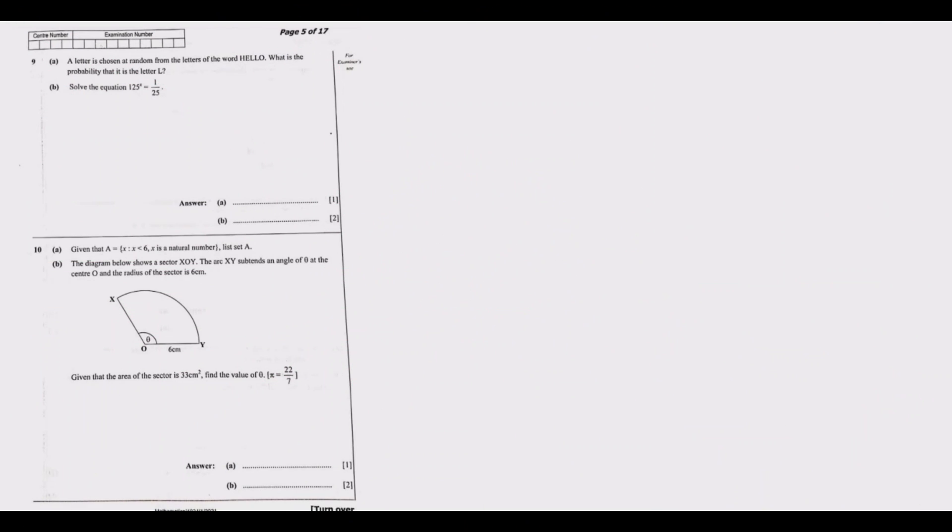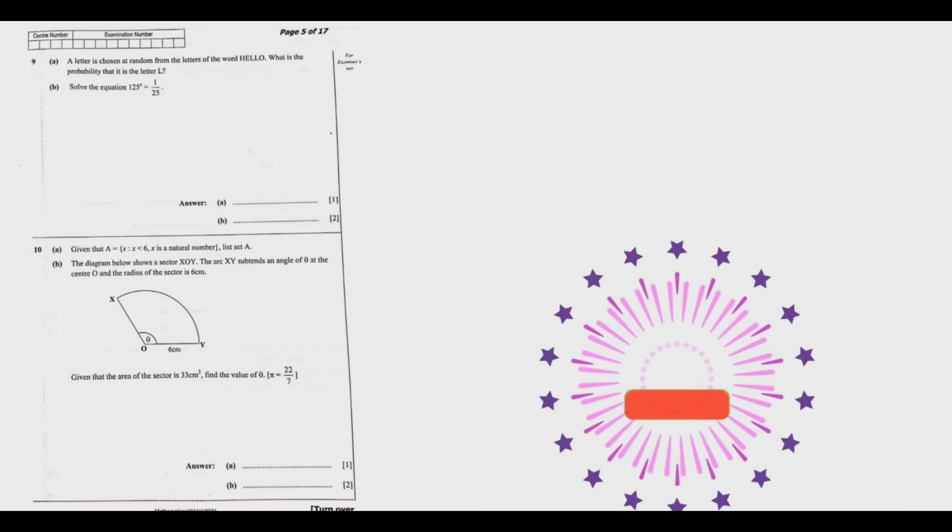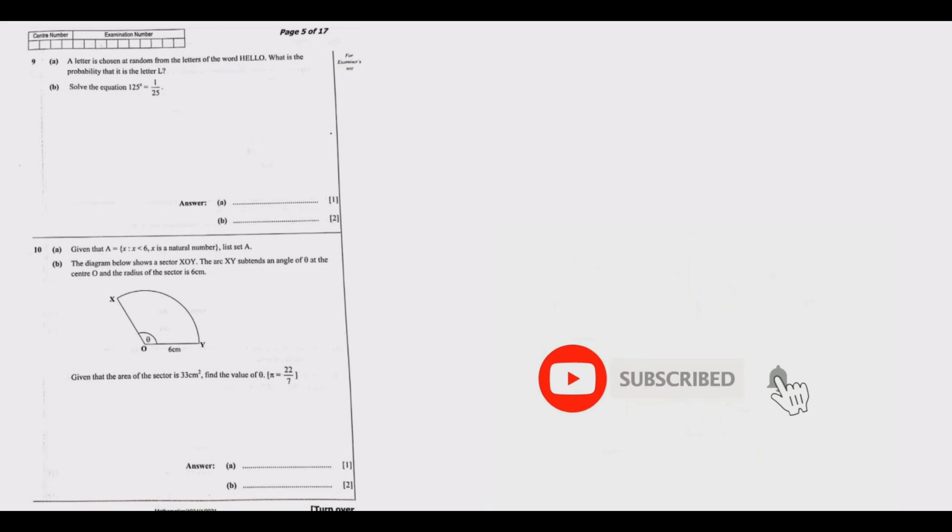Welcome to today's session. So we continue looking at question 9 of the 2021 grade 12 GCE mathematics paper 1. Question 9a: A letter is chosen at random from the letters of the word HELLO.